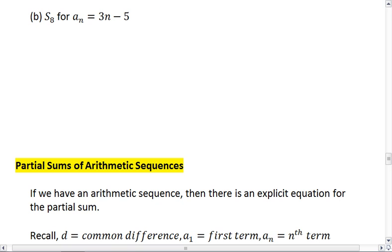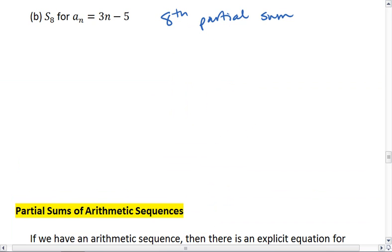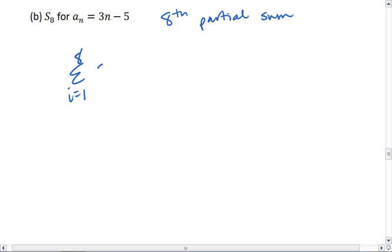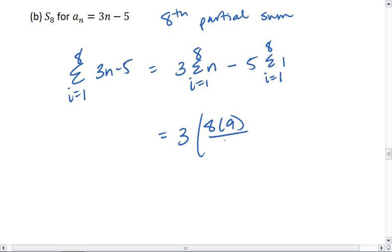Now let's look at the eighth partial sum for the following series. This means I'm summing from i equals 1 to 8 of 3n minus 5. This is the same as 3 times the summation from i equals 1 to 8 of n minus 5 times the summation of i equals 1 to 8 of 1. So I use my formulas and I find that I get 3 times 8 times 9 all over 2 minus 5 times 8, which gives me the 2 and the 8 reduce. So I get 3 times 4 times 9 is 108 minus 5 times 8 is 40. So 108 minus 40 will give me 68. The eighth partial sum of that series is 68.